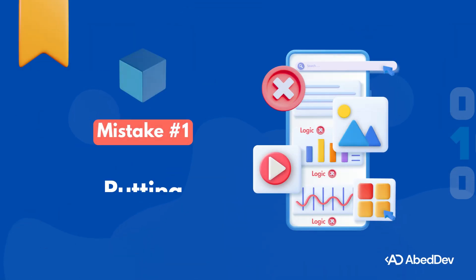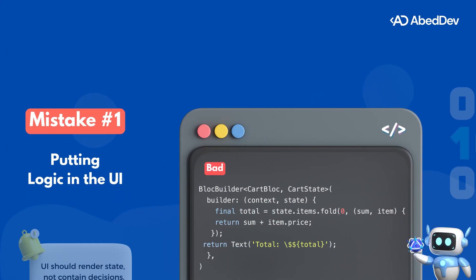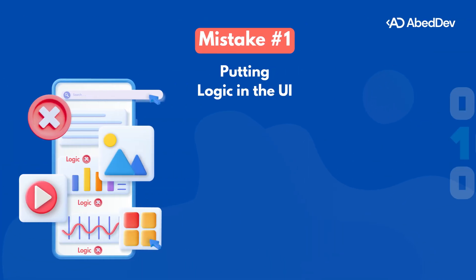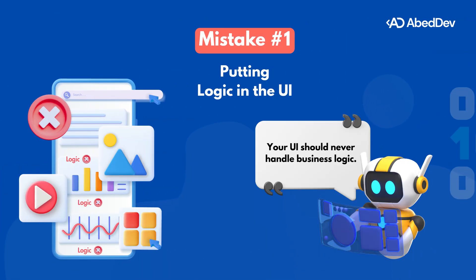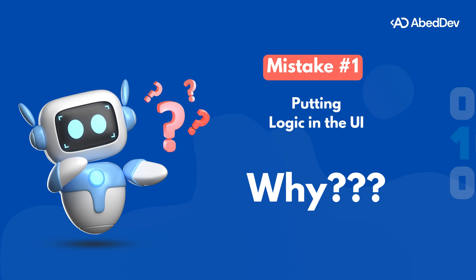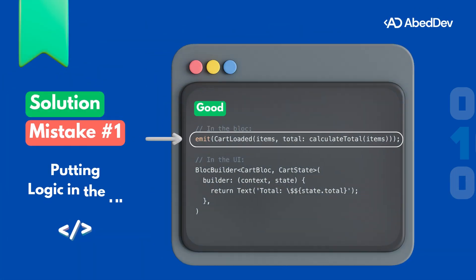Mistake number one: putting logic in the UI. In this code, the UI calculates the total by iterating over cart items. This technically works, but it breaks a golden rule — your UI should never handle business logic. The widget is doing more than just displaying data; it's thinking, and that's not its job. The fix: move the logic into your bloc, calculate the total when the state is emitted, and pass it along.